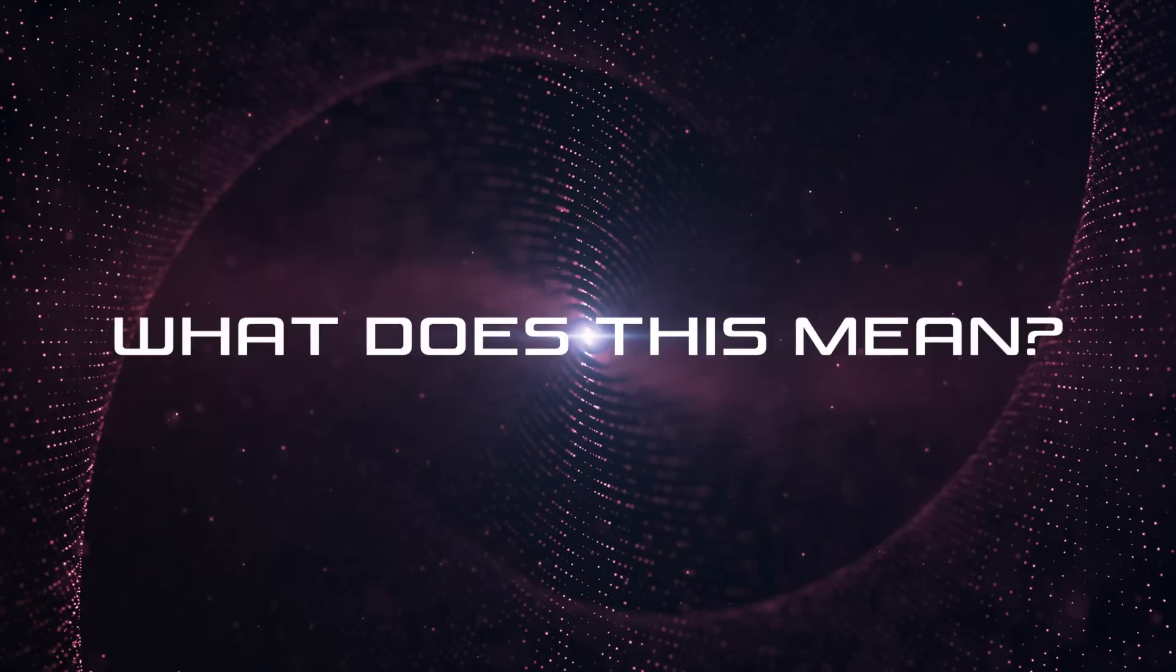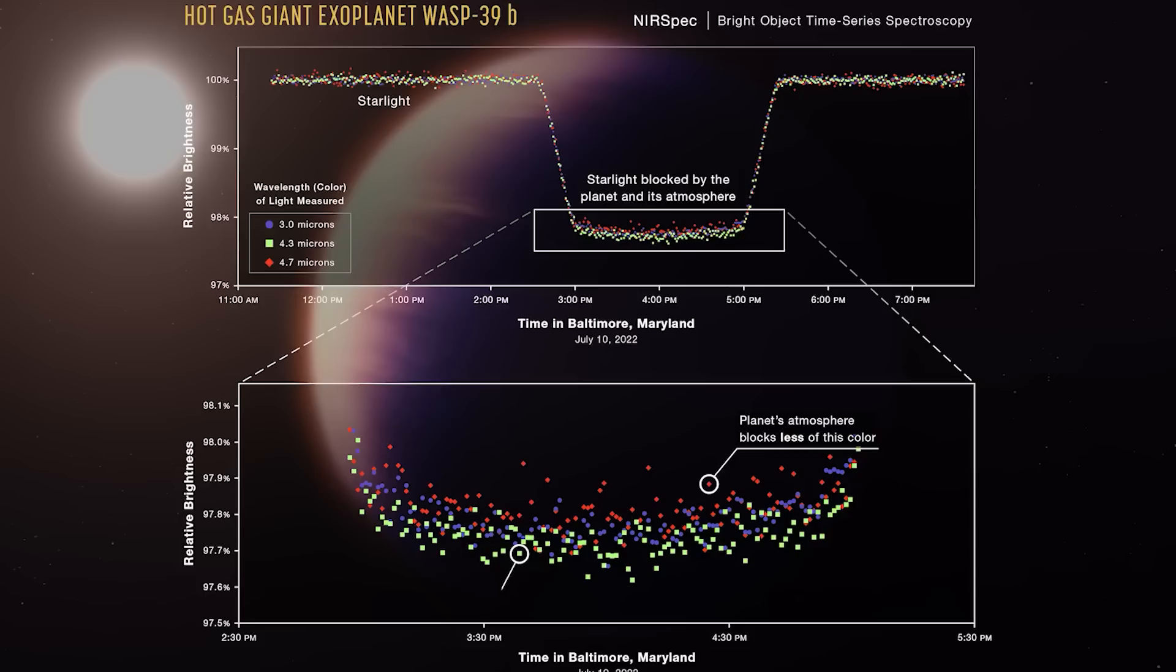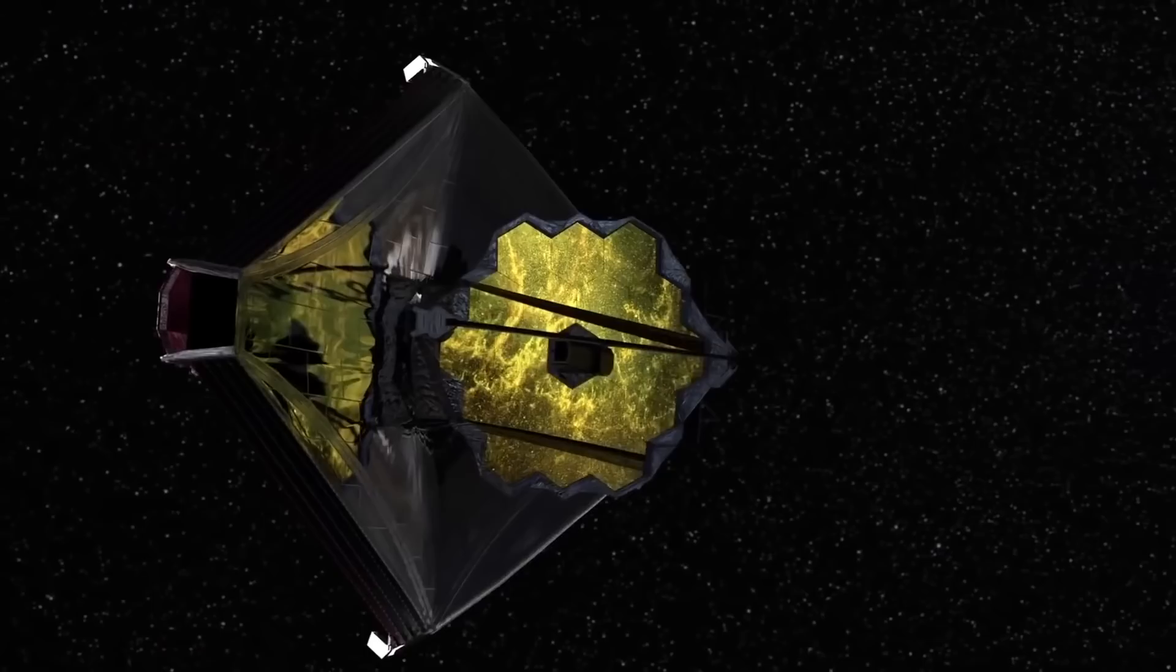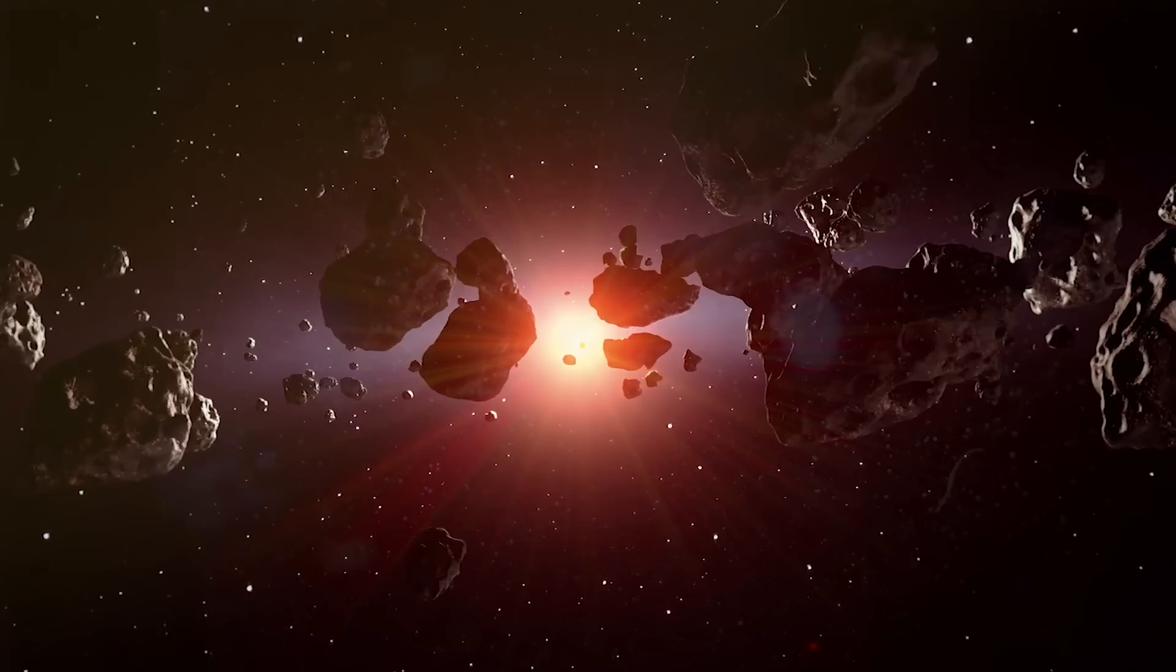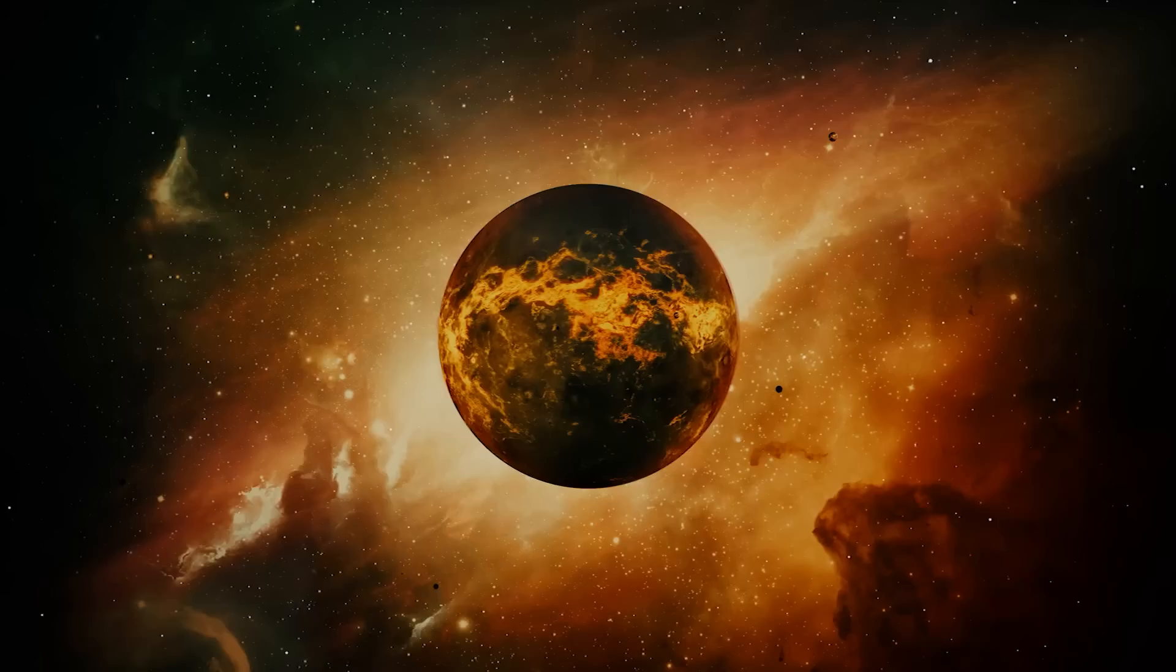The discovery of carbon dioxide on this exoplanet demonstrates the long-expected capabilities of the Webb Space Telescope to observe the atmospheres of planets outside of our solar system and reveal their composition and formation histories. These results open the door to learning about what makes up smaller rocky planets that are also thought to have carbon dioxide in their atmospheres.